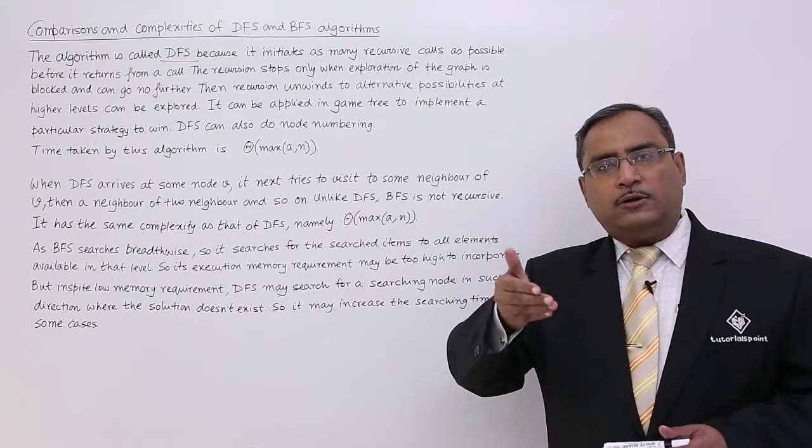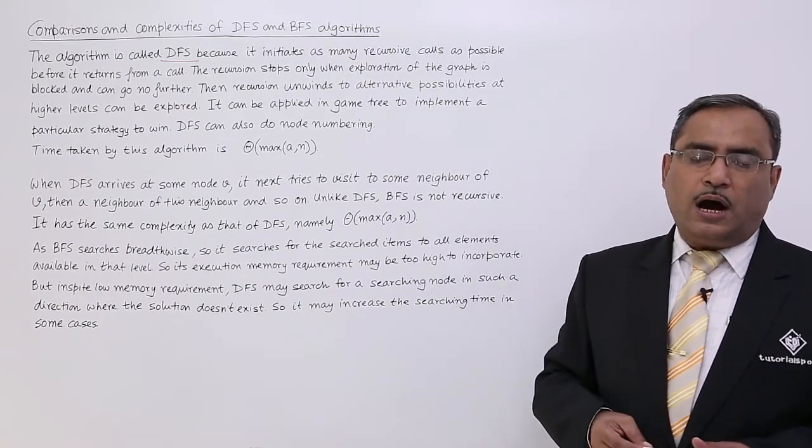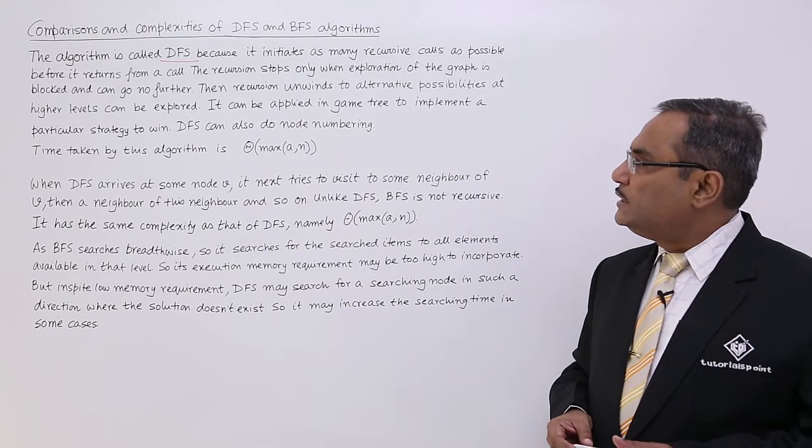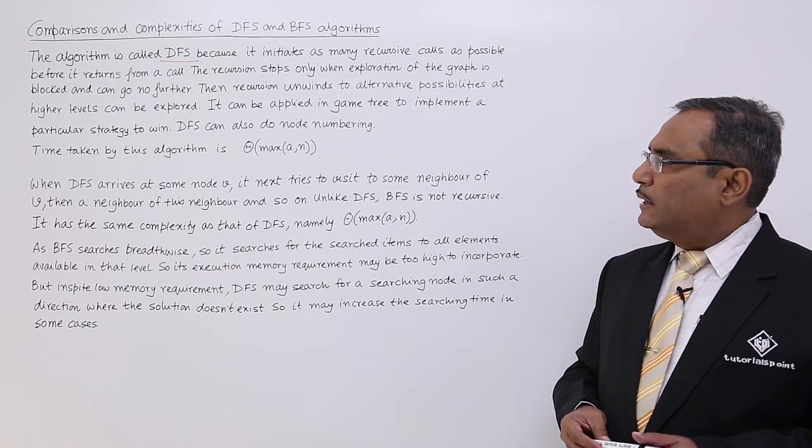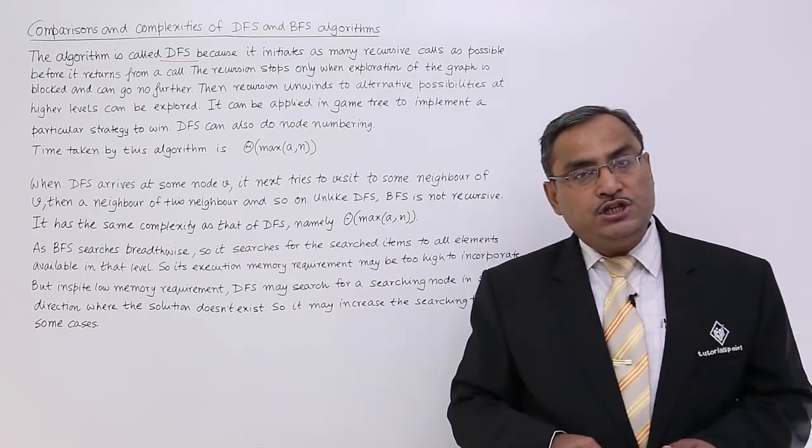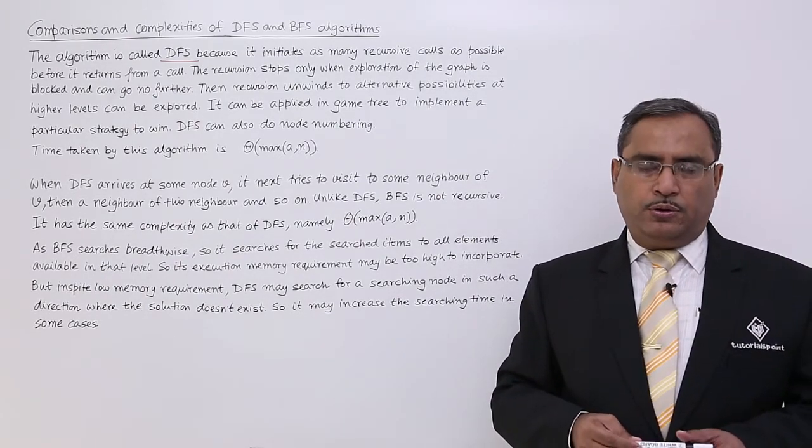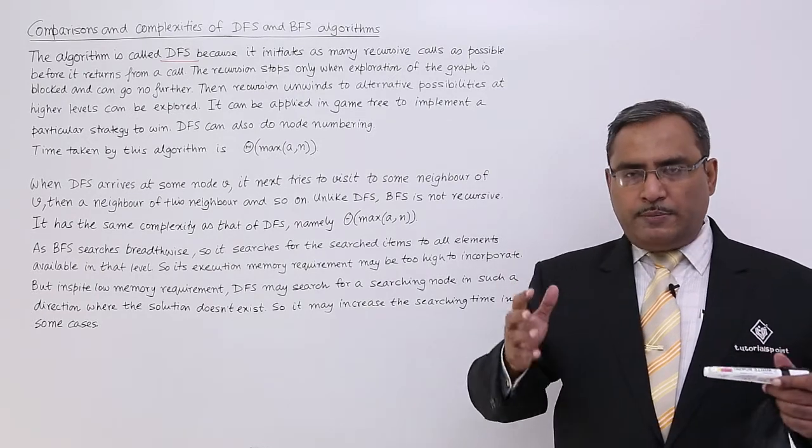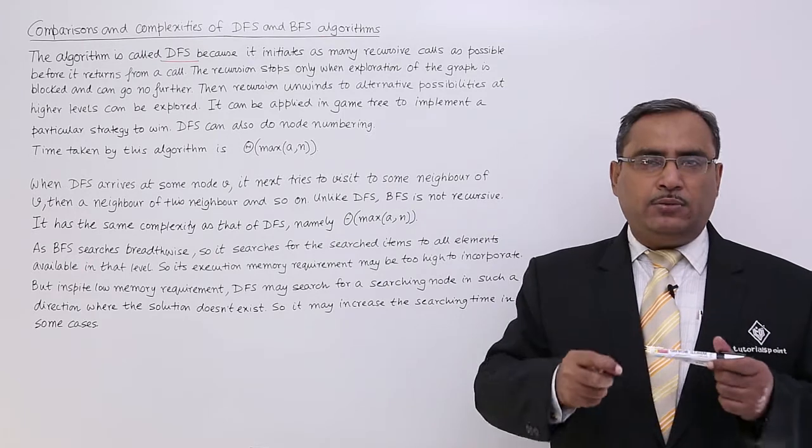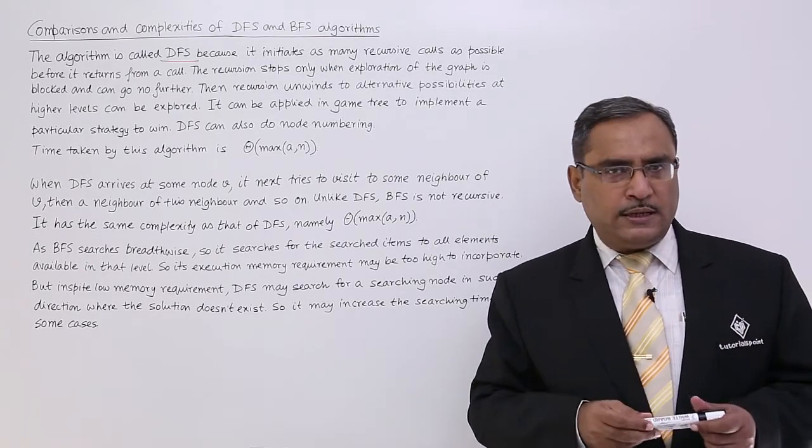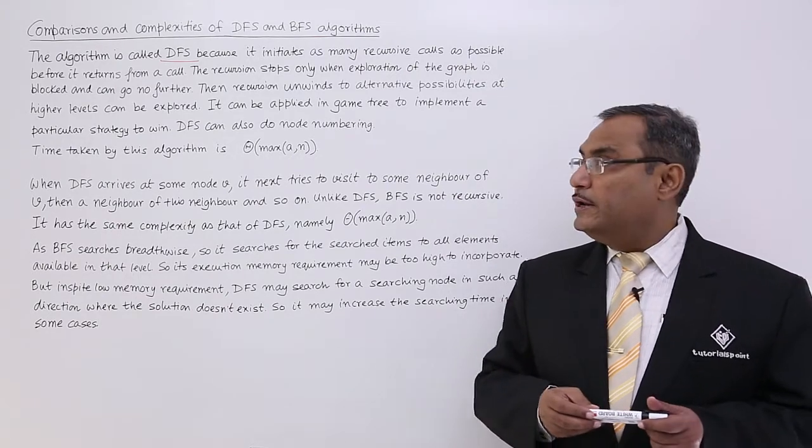Now it will return back to the caller and then from there it will explore if there are some unexplored, untraversed opportunities. It can be applied in game tree to implement a particular strategy to win. DFS algorithms we mainly use in the game tree. We know that we are having some game rules, we are having some game and then we shall go on playing with the game with our opponents. In those cases, this DFS algorithm will be the most suitable one to get implemented.